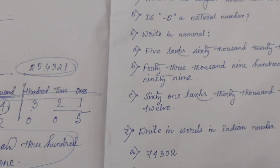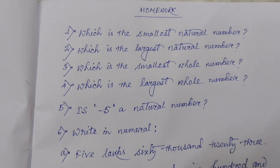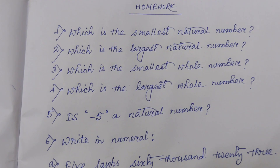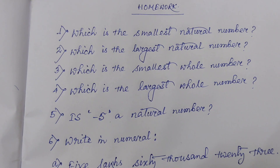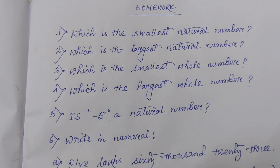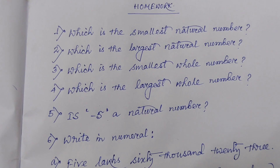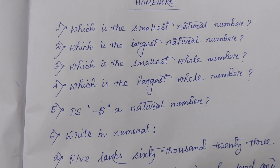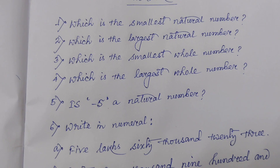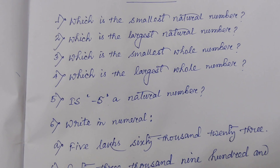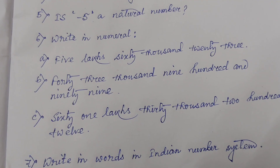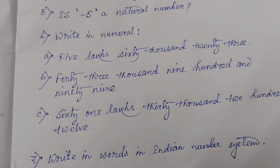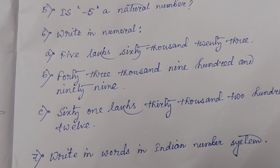Now this is some homework for you regarding today's discussion. Everyone note down the questions in your copy first, then write the answers. Question 1: Which is the smallest natural number? Question 2: Which is the largest natural number? Question 3: Which is the smallest whole number? Question 4: Which is the largest whole number? Question 5: Is minus five a natural number? Question 6: Write a numeral — (a) Five lakhs sixty thousand twenty-three; (b) Forty-three thousand nine hundred and ninety-nine.